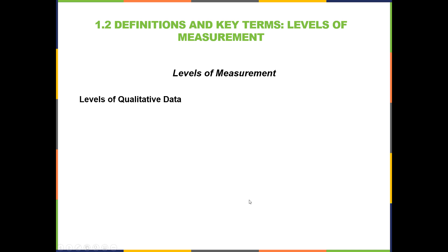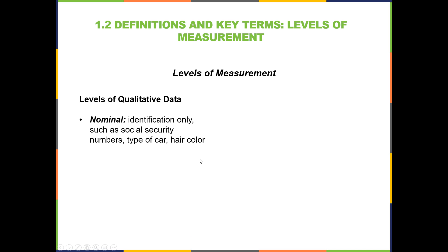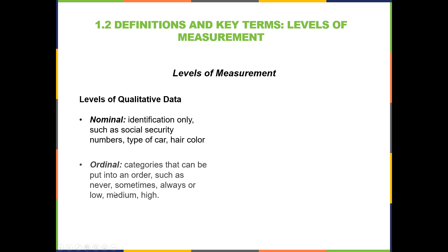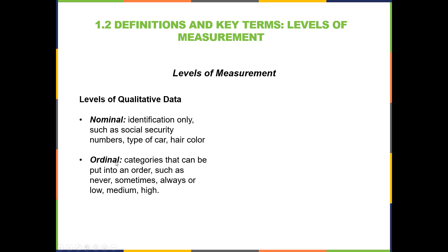With qualitative data we have two levels. Nominal, which is identification only, such as social security numbers, type of car, or hair color. And ordinal is the second level of measurement for qualitative data, where categories can be put into a meaningful order, such as choices like never, sometimes, always, or low, medium, high.